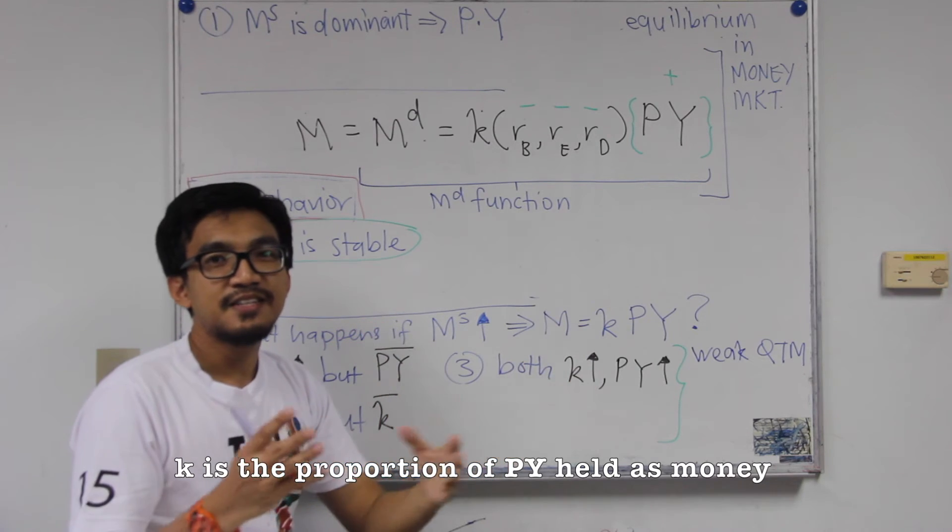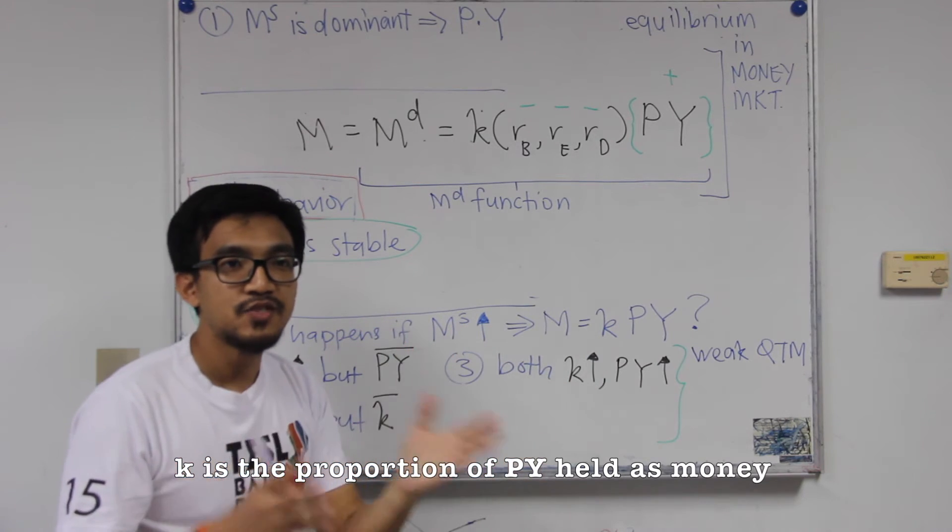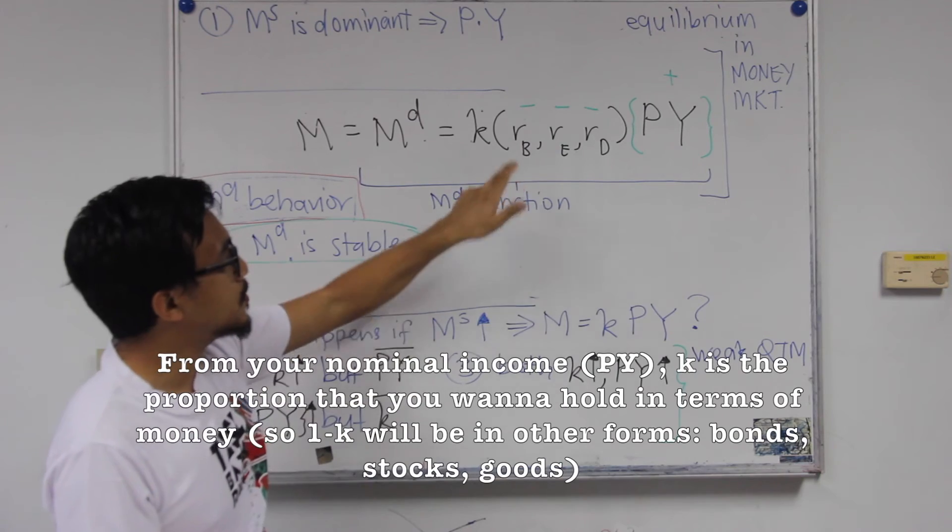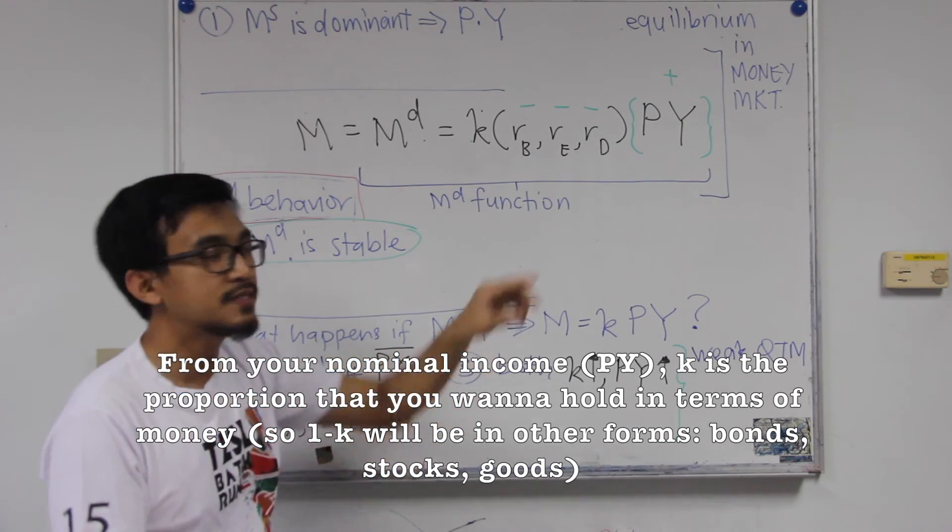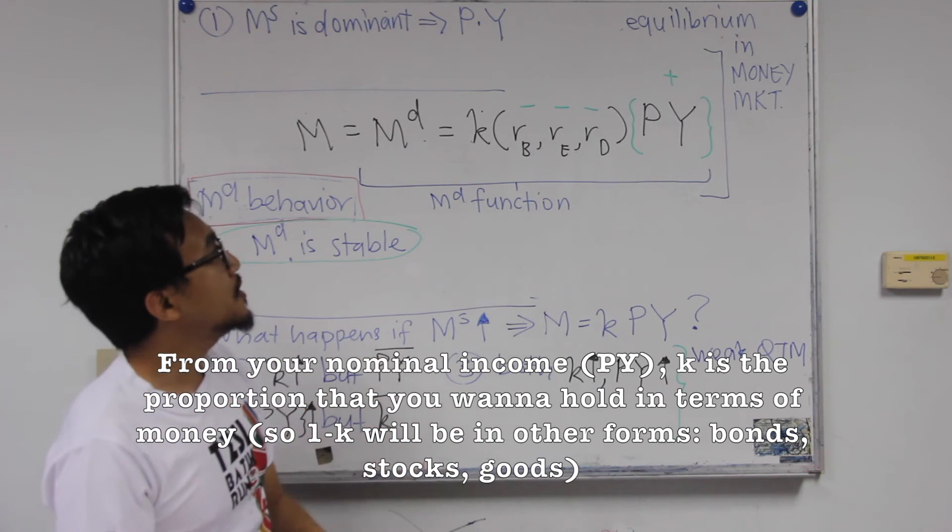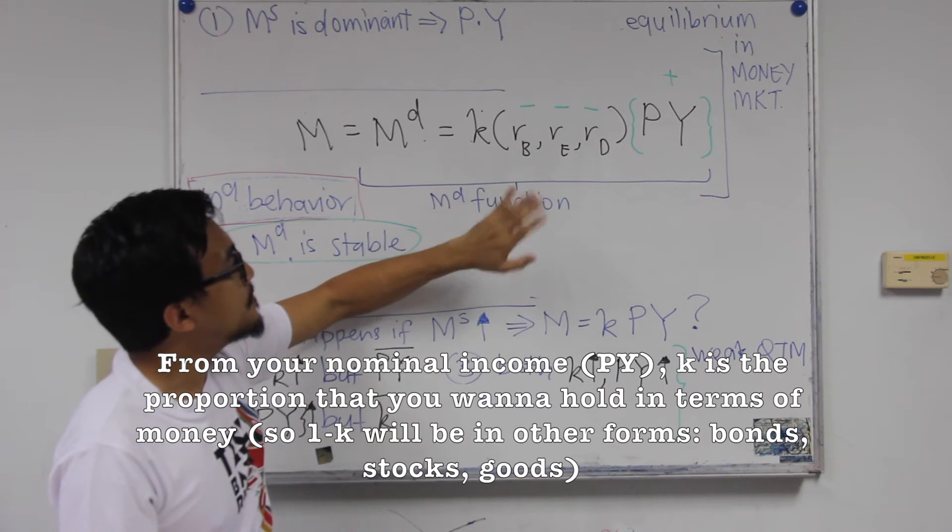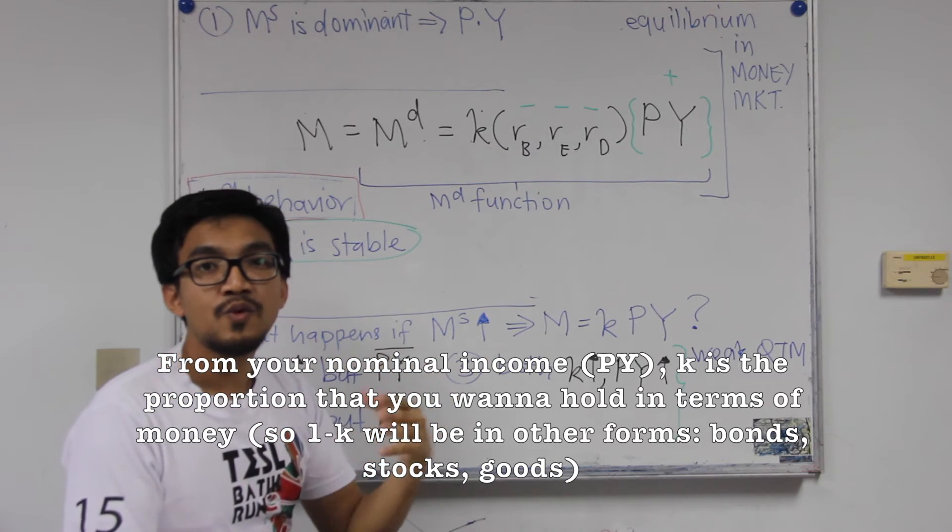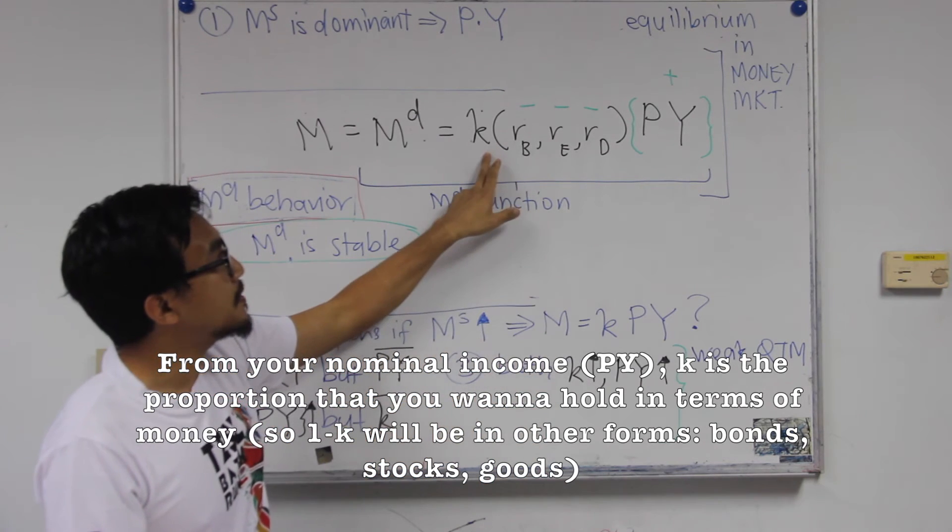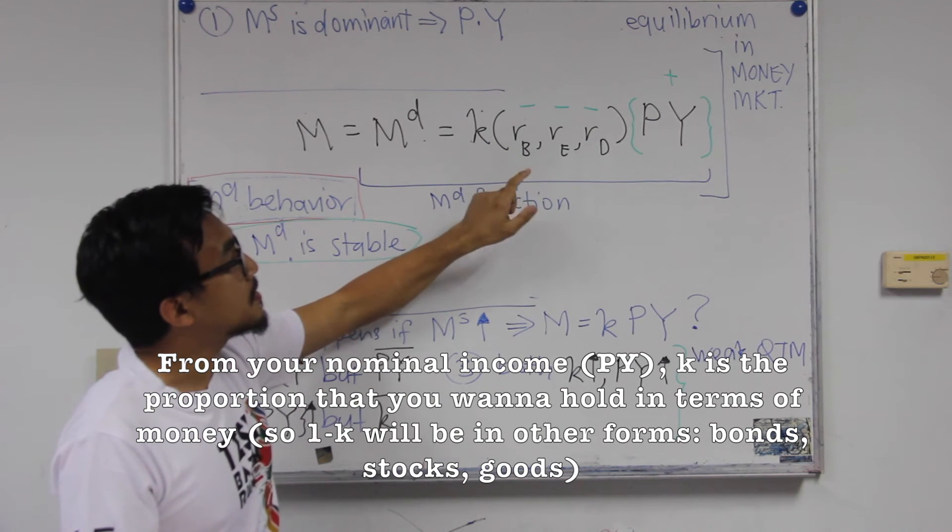So what the monetarists did is that they expanded the thing that explained K. Remember like basically the differences between the monetarists, the Keynesian and the classical, it can be the differences, how K behave. So according to the monetarists, Friedman, he expanded K by looking at what are the possible factors that can affect K.